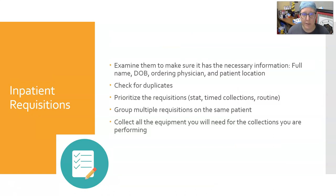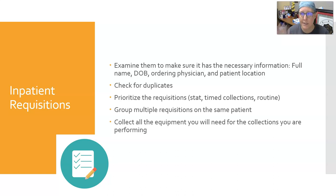For inpatient requisitions, you need to examine them to make sure they have all necessary information: full name, date of birth, ordering physician, and patient location. Also check for duplicates. Common duplicates would be an order for hemoglobin/hematocrit alongside an order for a CBC — a CBC already contains hemoglobin and hematocrit. Similarly, an order for potassium alongside a basic metabolic panel is a duplicate, since the BMP already includes potassium. You want to group multiple requisitions on the same patient to avoid unnecessary sticks.